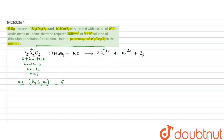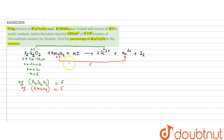For KMnO₄, the oxidation state of manganese is +7 and it is reduced to +2, so the change is 5. With one manganese atom, the n-factor for KMnO₄ is 5. For KI, the iodide ion is in the −1 oxidation state and is oxidized to I₂ at 0, so the change is 1, giving an n-factor of 1 for KI.